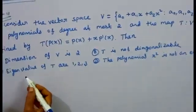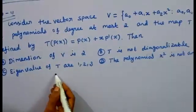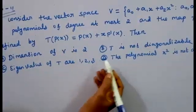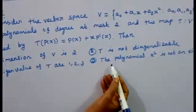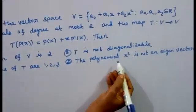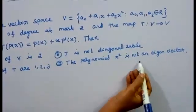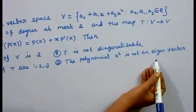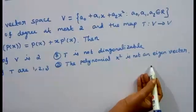The third option: the eigenvalues of T are 1, 2, 3. The fourth option: the polynomial x² is not an eigenvector.